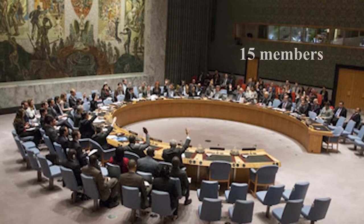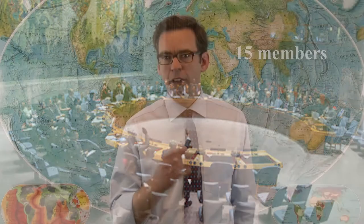The Security Council is made of 15 members, 5 of which are permanent members. Those permanent members are China, France, Russia — who took over from the USSR — the United Kingdom, and the United States of America. They are often referred to as the P5 nations, or permanent members.